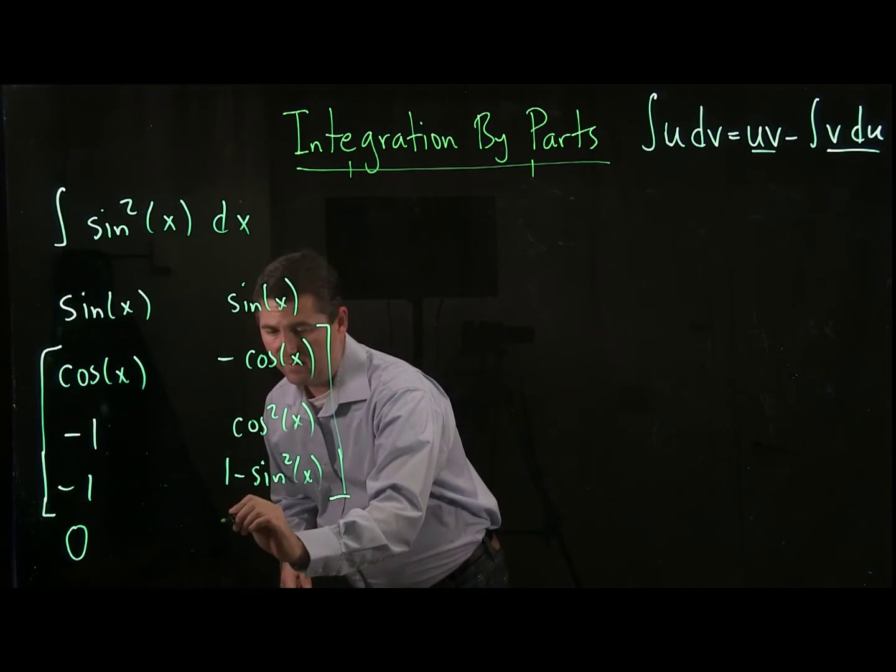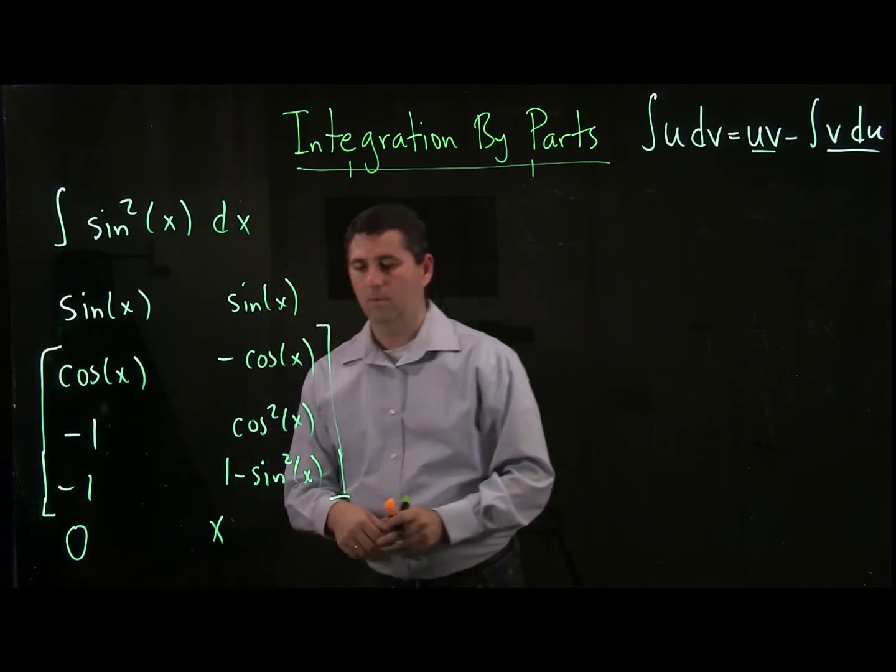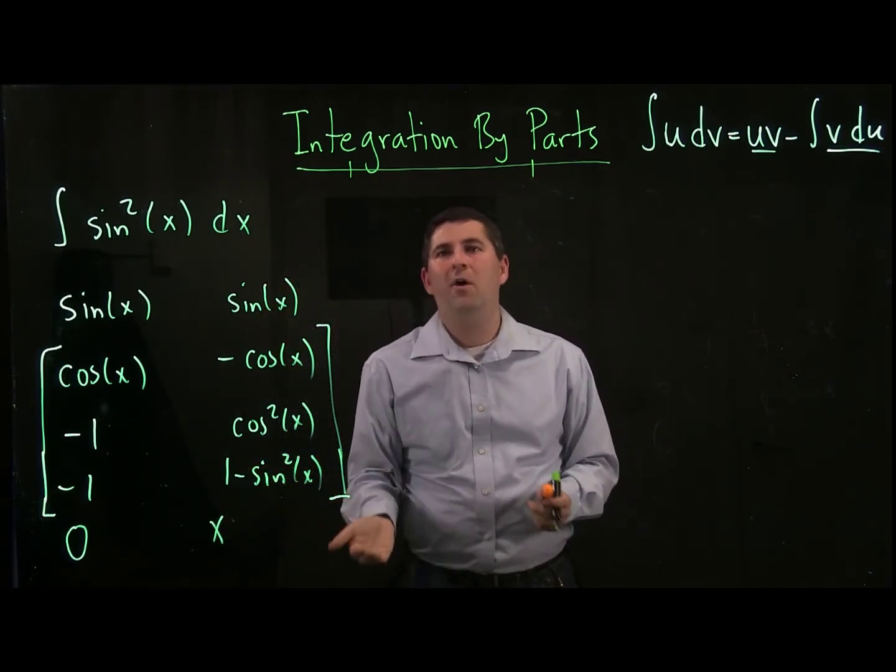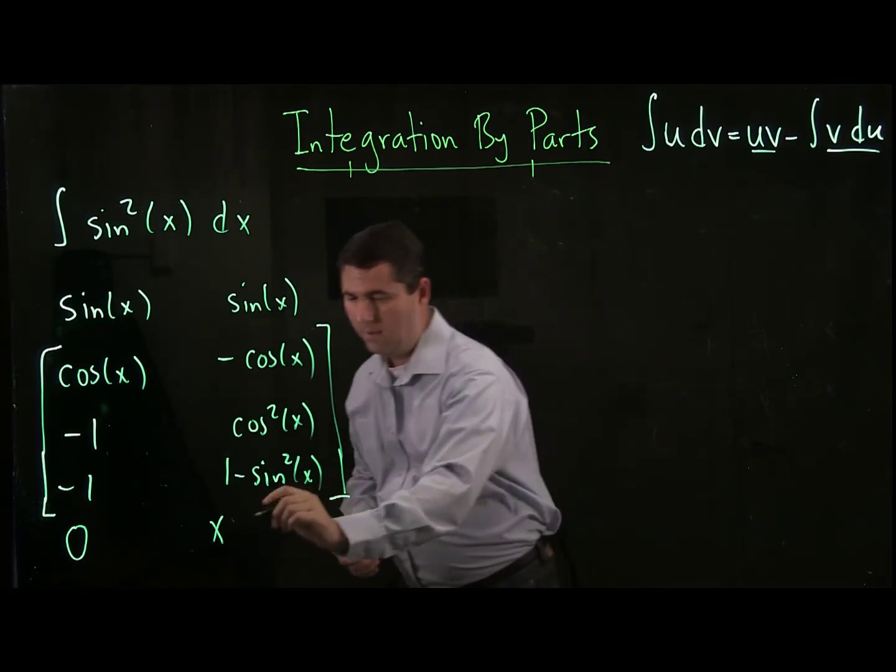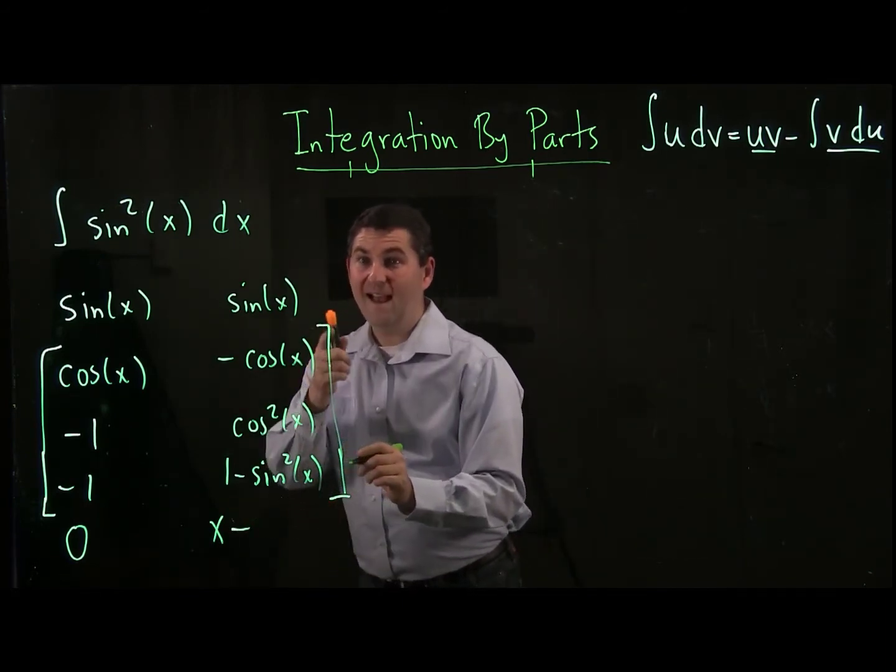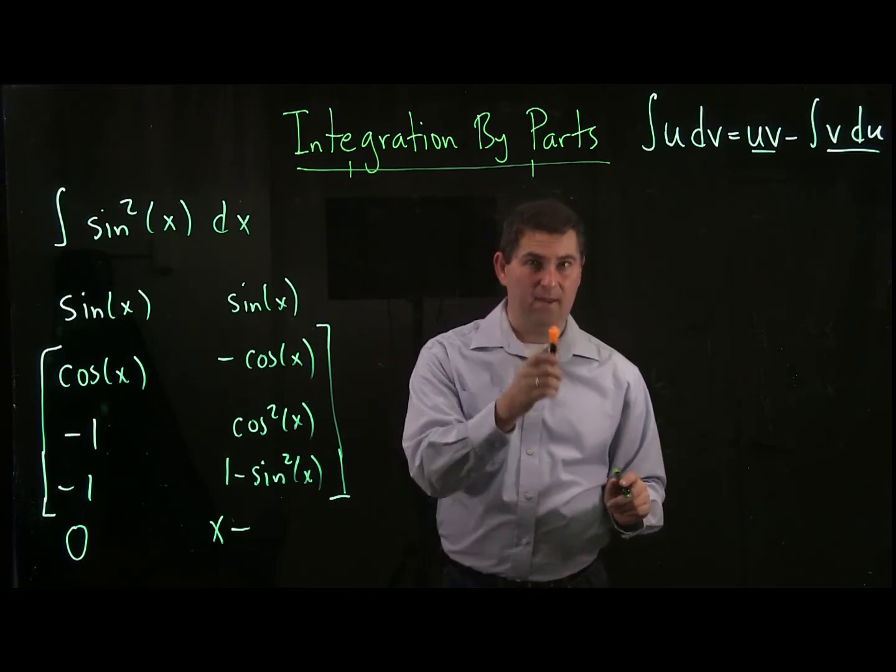and I take an anti-derivative of one minus sine squared. Well, anti-derivative of one is x, but this was the problem. I don't know an anti-derivative for sine squared.